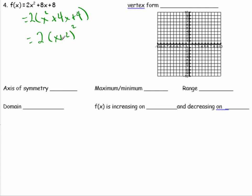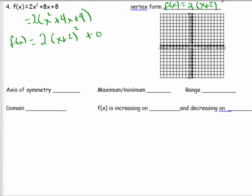So in this case, the vertex has a plus 0 out here. Alright? So the vertex form is f(x) = 2(x + 2)². Now, the vertex itself is at (-2, 0). The axis of symmetry is x = -2.